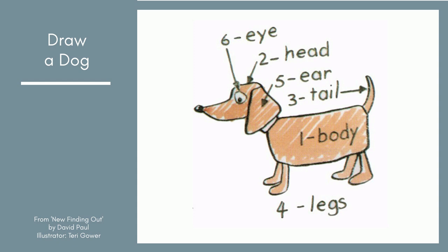Another way is for each part of a picture to correspond to a different number on a dice. At the beginning of the lesson, you or one of the children draw a picture on the board — for example, a dog — and number the parts from 1 to 6: 1 could be the body, 2 could be the head, and so on. During the lesson, a child gets a chance to roll the dice and try to copy the picture. If they roll a 1, they draw the body; if they roll a 2, they draw the head. If they have already drawn that part, they cannot draw anything.